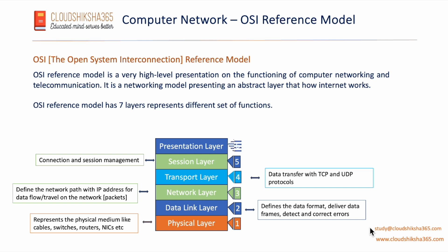Layer 6 is the presentation layer. This layer handles encryption and decryption of data. It also takes care of data formatting — ensuring data is received in the right format, identifying the protocol used, and determining the data type. All presentation formats are handled here. In short, the presentation layer presents data in a usable format and also handles encryption.